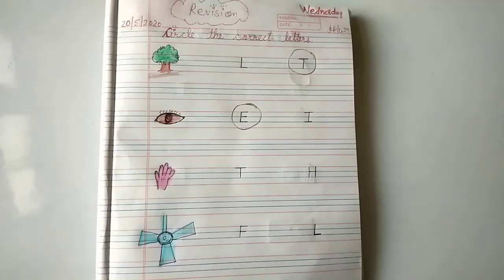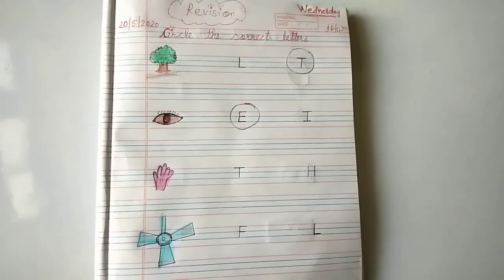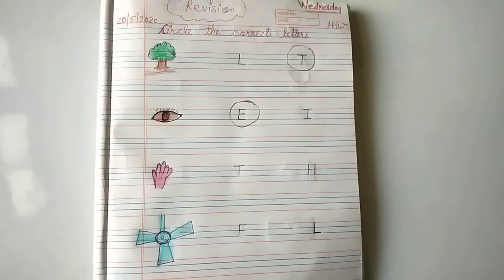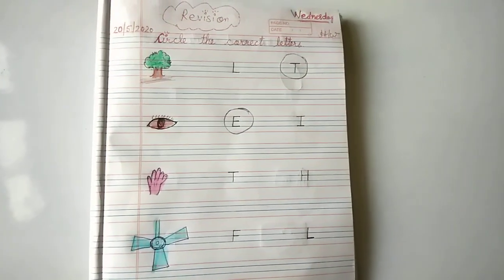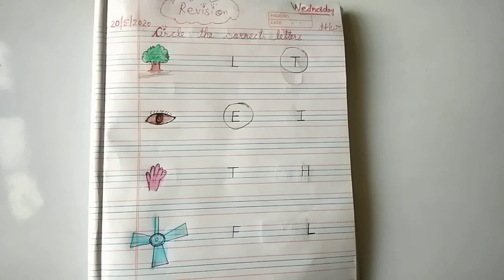Now all children have understood properly the meaning of circle the correct letters. I have shown you the practice, how to do revision. And this remaining work is very easy.